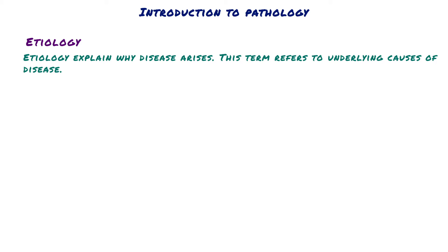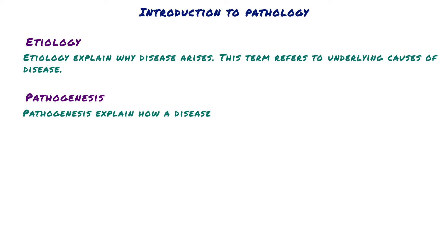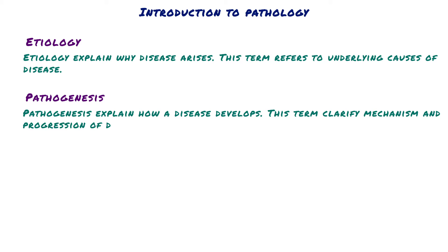The second one is pathogenesis. Pathogenesis explains how a disease develops. This term clarifies the mechanism and progression of disease.